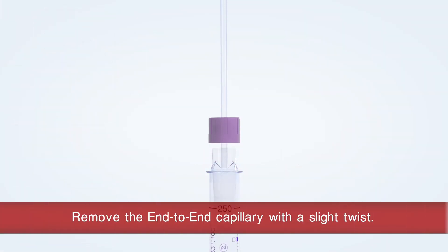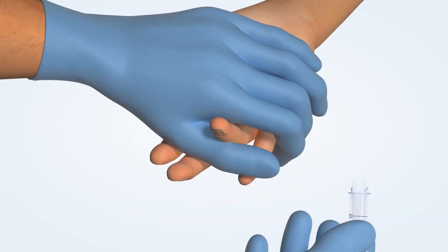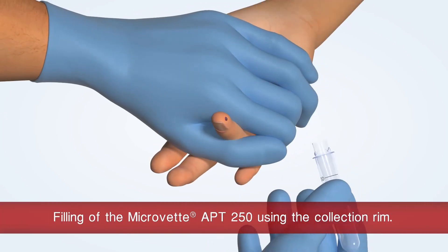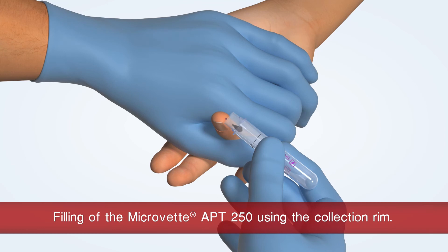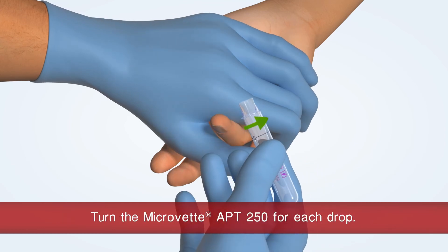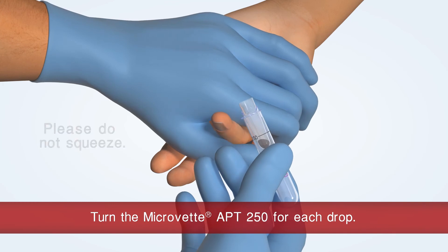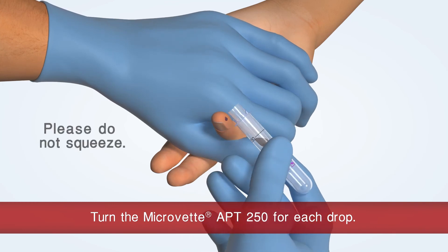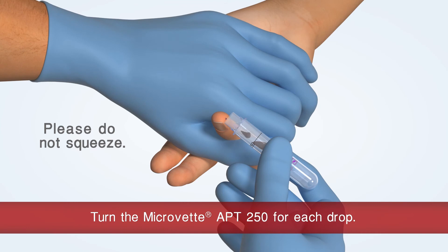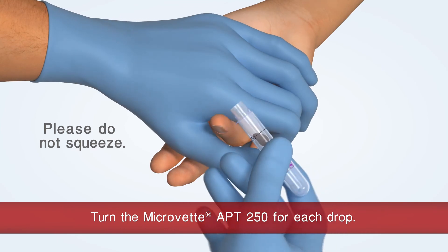Hold the Microvette APT250 and twist off the cap with the end-to-end capillary. Fill the Microvette APT with the help of the collection rim. Make sure that you continue to rotate the Microvette APT after each drop. This ensures good mixing with the preparation and prevents the formation of clots.